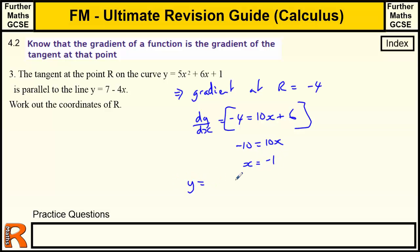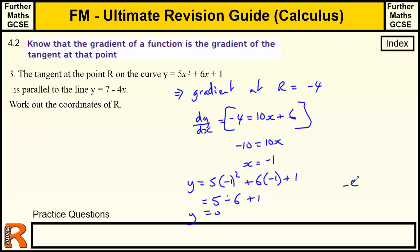So the x coordinate is minus 1, and the y coordinate is going to be 5 lots of minus 1 squared plus 6 lots of minus 1 plus 1. That's 5 minus 6 plus 1, which is 0. So y equals 0, and the coordinates of R are (minus 1, 0). So R must be the point where the gradient equals minus 4 — found by differentiating the curve, setting it equal to minus 4, finding x equals minus 1, then substituting back to get y equals 0.